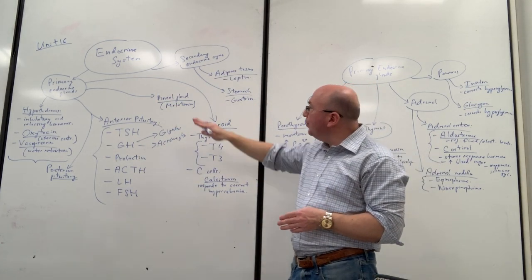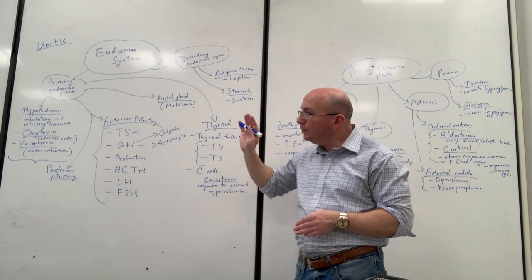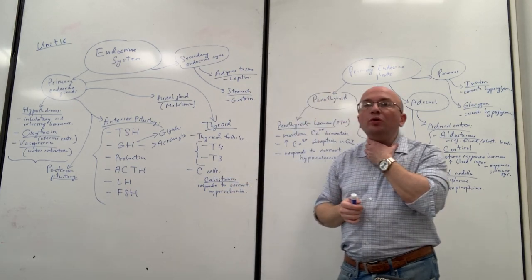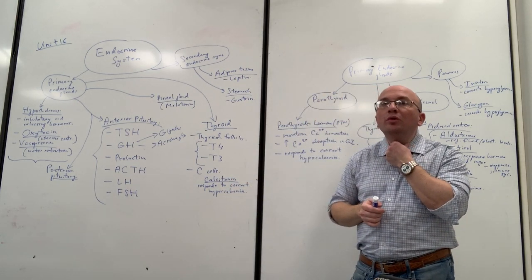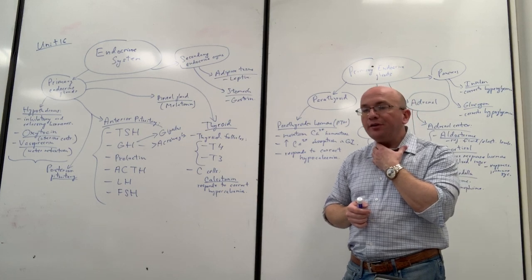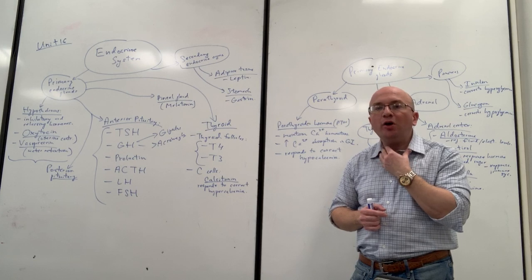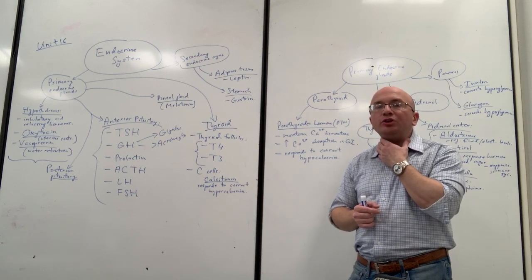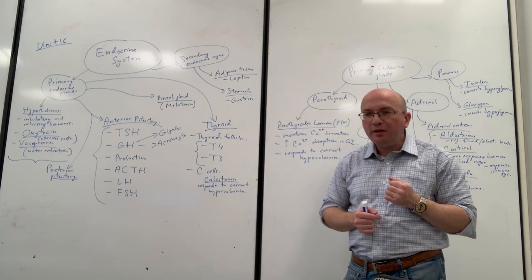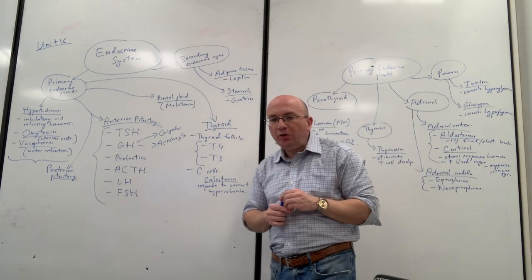Now we're finally out of the brain area and moving to the trachea area — the anterior neck — where we have the thyroid. The thyroid is located at the thyroid cartilage, which is the anterior wall of the larynx — the voice box. On the outside, there's this butterfly-shaped organ called the thyroid.